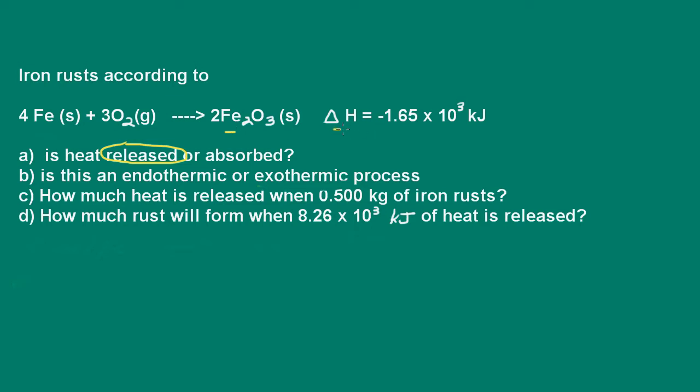And we're given a delta H for this reaction, which is negative 1.65 times 10 to the third kilojoules. So we're being asked, is heat released or absorbed? Well, it's released. It's released because delta H is negative.